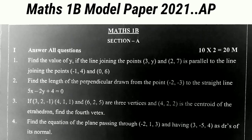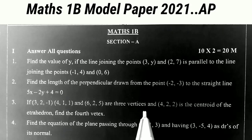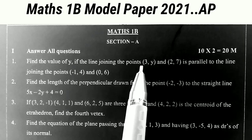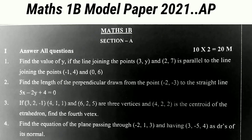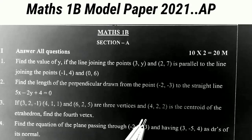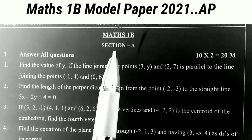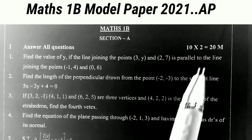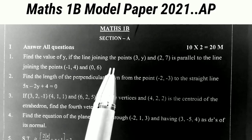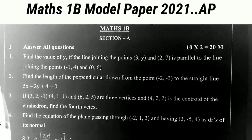This is the most important video for first year intermediate students. In this video I will show you the Maths 1B model paper for 2021 Andhra Pradesh. In the maths paper we have three sections: Section A, Section B, and Section C. Section A contains 10 problems, each carrying two marks, and there is no choice here, so answer all questions.